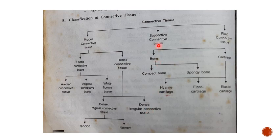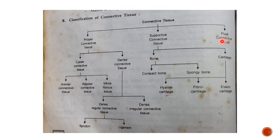Supportive connective tissue includes bone, which is the hardest part of our body, and cartilage, which is rigid but flexible — including compact bone, spongy bone, hyaline cartilage, fibrocartilage, and elastic cartilage. The third part is fluid connective tissue, under which we study blood and lymph.